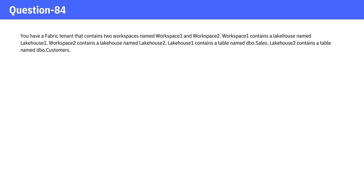You have a Fabric tenant that contains two workspaces named Workspace 1 and Workspace 2. Workspace 1 contains a lakehouse named Lakehouse 1. Workspace 2 contains a lakehouse named Lakehouse 2. Lakehouse 1 contains a table named dbo.sales. Lakehouse 2 contains a table named dbo.customers.